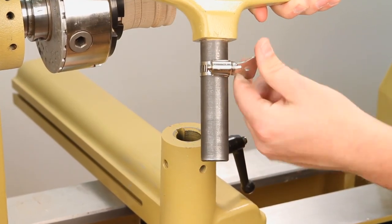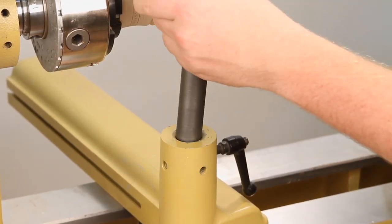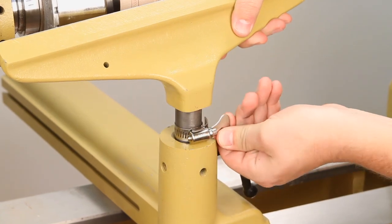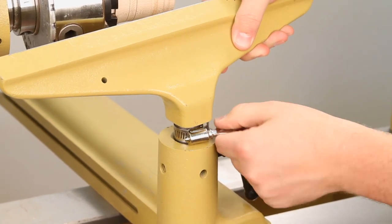Simply slide the lock onto the tool rest, place the post into the banjo, adjust to the desired height, and tighten.